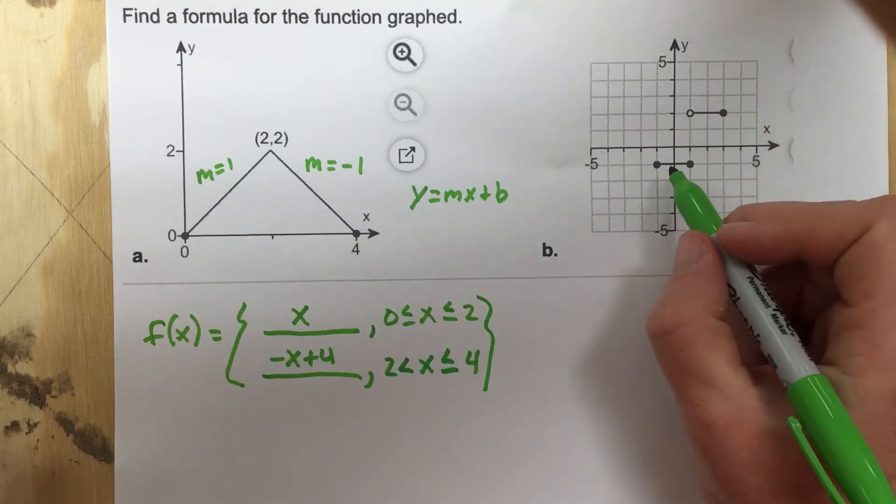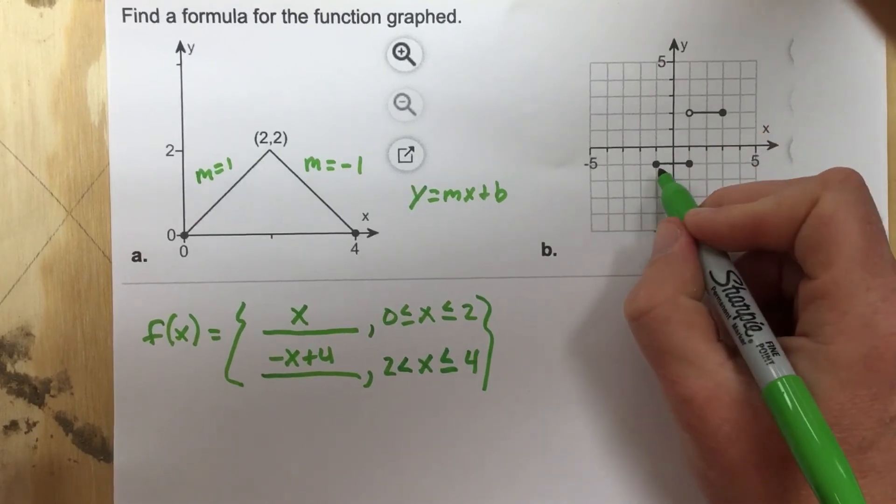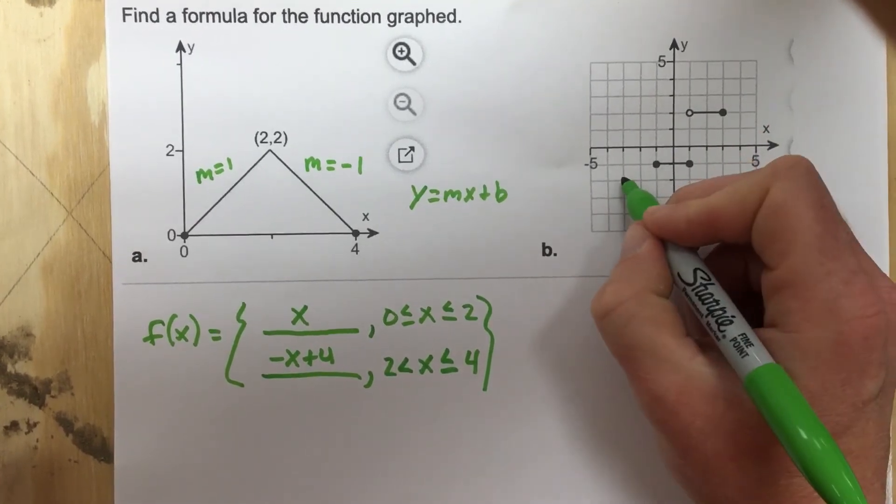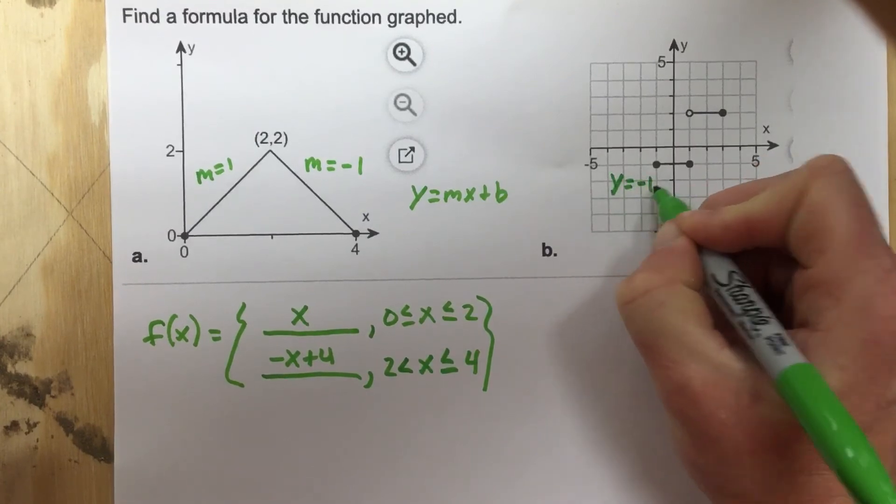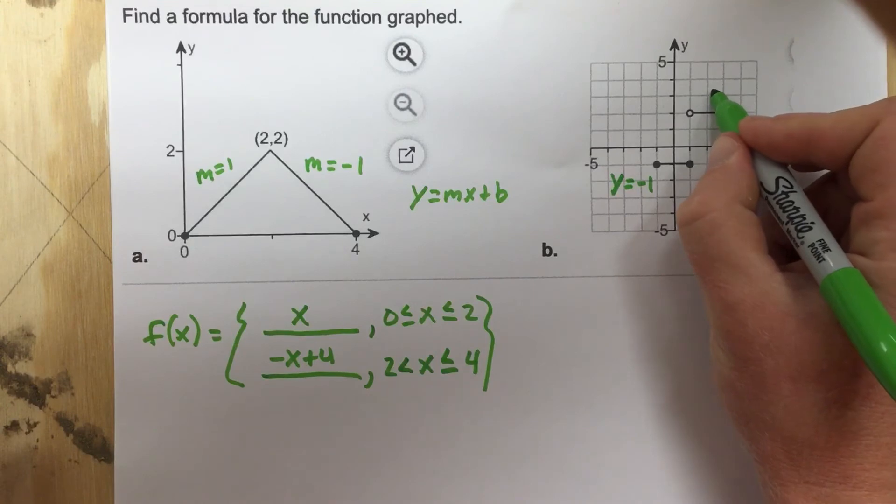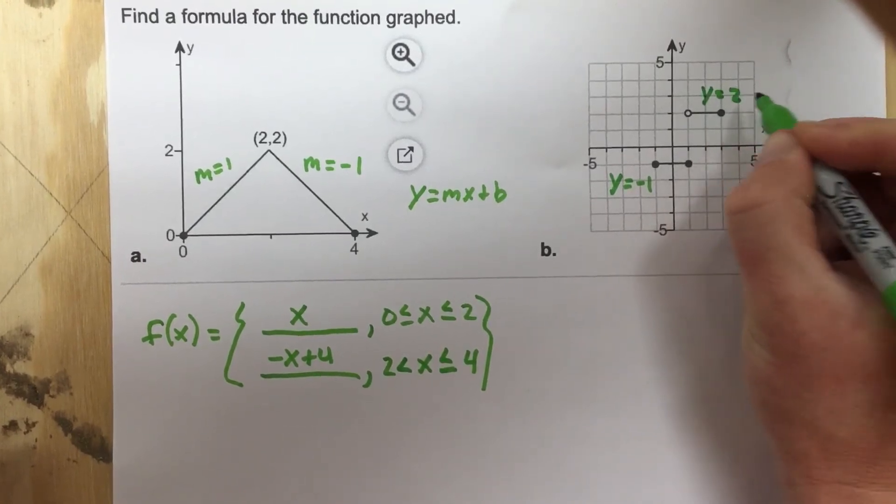For the second function that's in the graph, you can see that this is a flat line. So because it's a flat line, this is y equals negative 1 for a function there, and this is a flat line, and this is y equals 2 for a function.